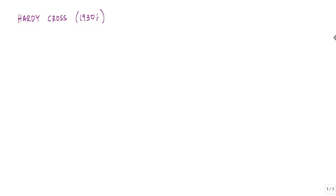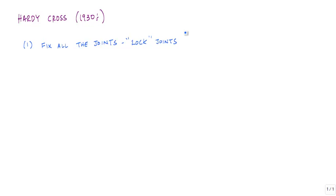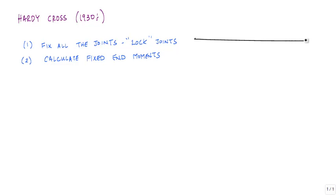The idea behind the technique is that the first thing you do when given a beam structure is to fix all the joints. A lot of times people call this locking it. When you lock the joints, you calculate the fixed end moments at each member. Let me throw up a beam structure — something relatively simple. Hopefully you know by now that this is statically indeterminate.